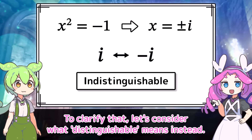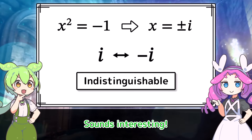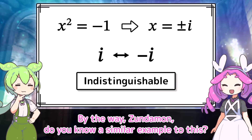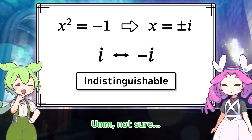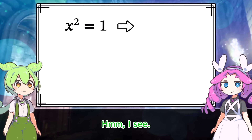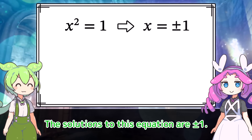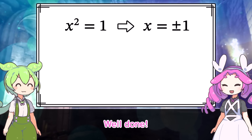To clarify that, let's consider what distinguishable means instead. By the way, do you know a similar example to this? How about thinking about the equation x squared equals 1? I see — so the right-hand side is 1 instead of negative 1. The solutions to this equation are plus or minus 1.